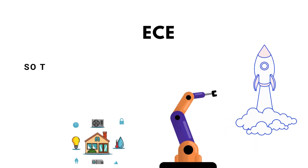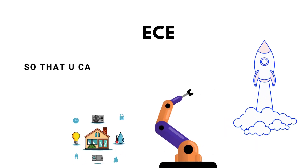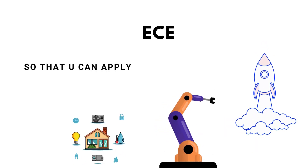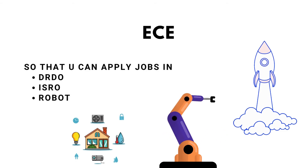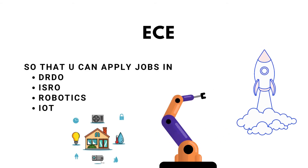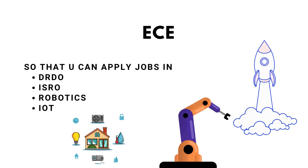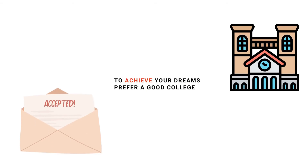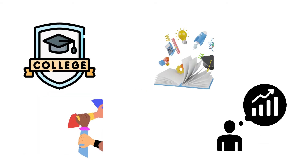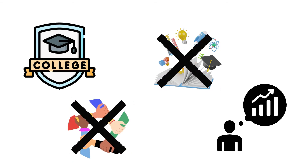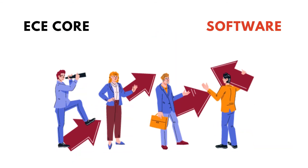If you have interest in ECE and electronics and physics, you have options like TARVATA, DRDO, ISRO, Robotics, and IoT. If you want to work in these areas, ECE is the best choice. There are also many opportunities, and a better college will give you more support and knowledge. ECE also has about 90% software job opportunities.